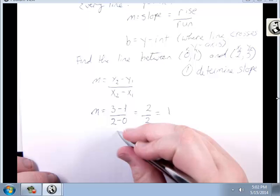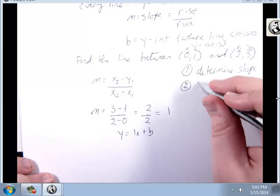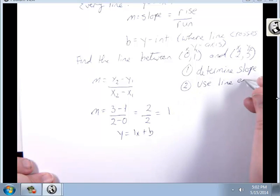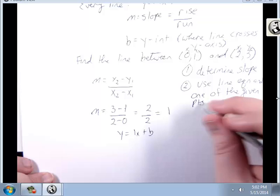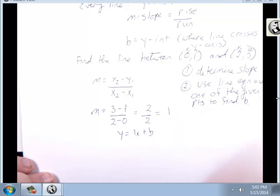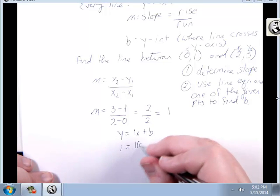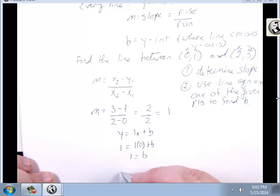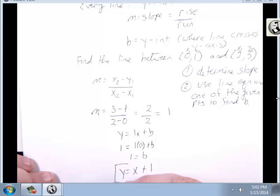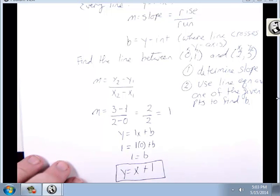So this is my line: y equals 1x plus b. Second, use the line equation and one of the given points to find b. It does not matter which one I use, so I'll stick with the first one. y equals 1 times 0 plus b. 1 times 0 is 0, so 1 equals b. Therefore, y equals x plus 1.